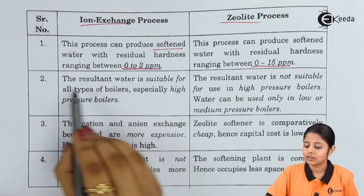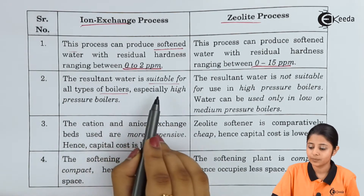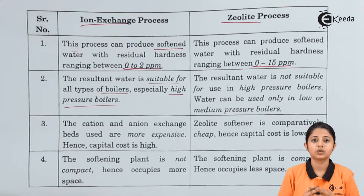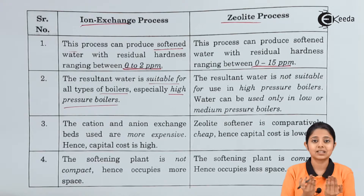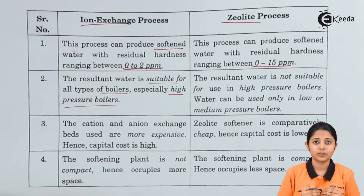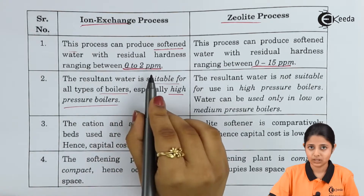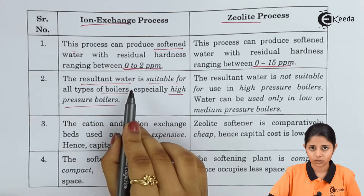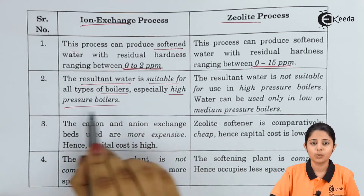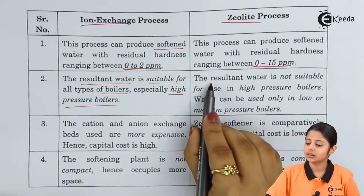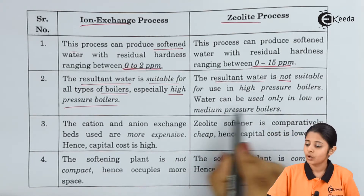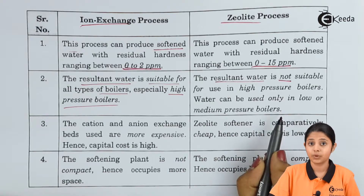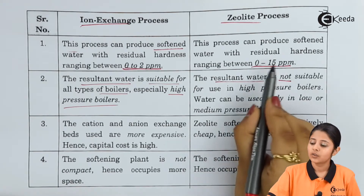The resultant water from the ion exchange process is suitable for all types of boilers, especially high pressure boilers. Boilers are machines that boil water, and impurities can get stuck to their walls. Since the softened water from ion exchange has only 0 to 2 ppm of impurities, it can be used in any kind of boiler. For the zeolite process, the resultant water is not suitable for high pressure boilers and can only be used in low or medium pressure boilers due to its 0 to 15 ppm of impurities.